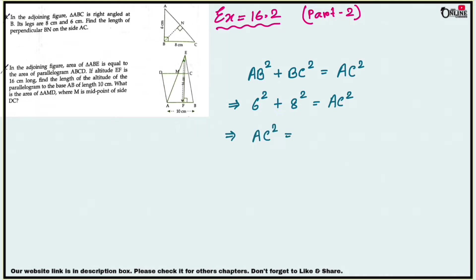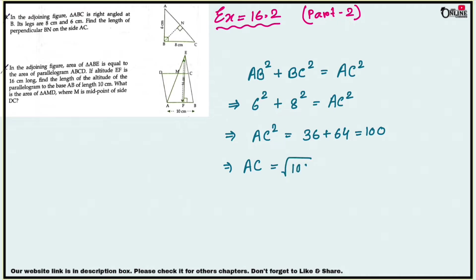Six squared is 36, eight squared is 64, and 36 plus 64 equals 100. So AC equals the square root of 100, which is 10 centimeters. Now we have to find the value of BN.